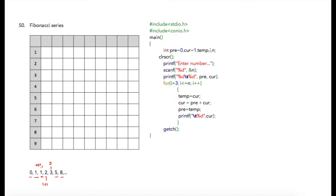We are going to write a program in which a number will be accepted from the user and the Fibonacci series will be printed up to that level. For example, if the user enters 5, then the series will be 0, 1, 1, 2, 3. To solve this problem we will require two variables — I am naming them as previous and current. We initialize previous equal to 0 and current equal to 1, which are the first two numbers of the series.